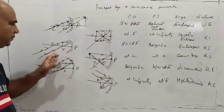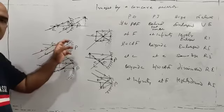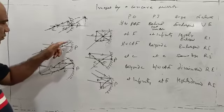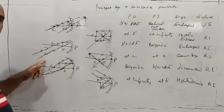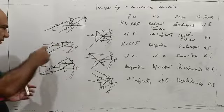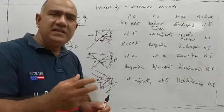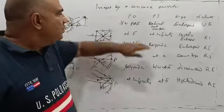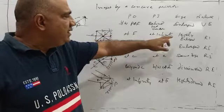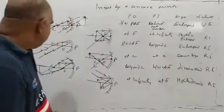For the second position, the object is kept at the principal focus. One light ray passes through the center of curvature and retraces its path, and another light ray passes parallel to the principal axis and after reflection passes through the principal focus. After getting reflected from the surface of the mirror, the rays become parallel. Parallel light rays always meet at infinity, so when the object is kept at the focus, the image will be found at infinity — it is highly enlarged in size and it is real and inverted.